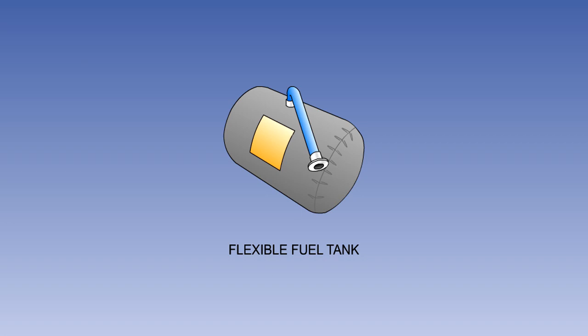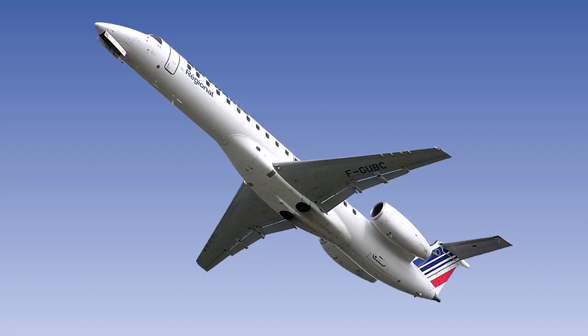Flexible tanks are reinforced rubberized bags installed in a section of the aircraft structure designed to accommodate the weight of the fuel. They are sometimes referred to as fuel bladders or bag tanks. The bladder is secured by means of metal buttons or snaps inside the compartment. Many high performance light aircraft and some smaller turboprops use bladder tanks.